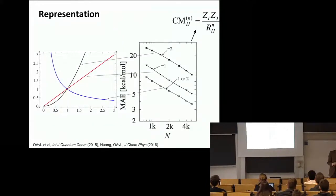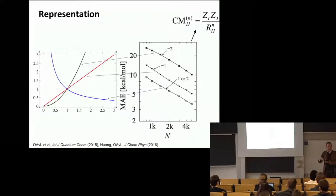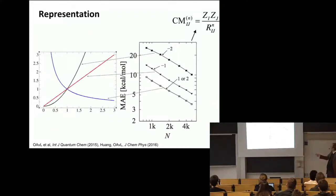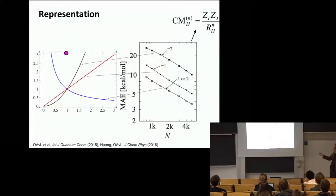This led us to believe that what you really need is something that models the truth — we should include the right physics in order to learn the right physics. We tested this using the Coulomb matrix: the Coulomb matrix is just one over r, shown in blue. If you play with this exponent, put it to minus one, then you just have a linear function — you can still learn it, it's unique, but the offset is worse. Put it to a quadratic and things get even worse. Conversely, if you increase the exponent, your learning curve improves — it's optimal around 4, 6, 8, which are common London dispersion power laws. For 10, it comes up again. So something more physical improves the machine.